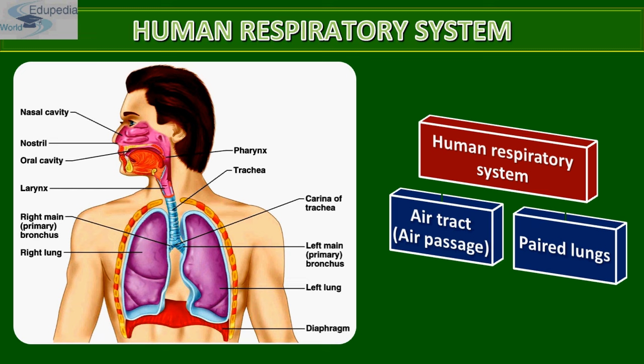Mammals have a well-developed respiratory system. Humans have a well-developed respiratory system which is composed of an air tract or air passage and the paired lungs.